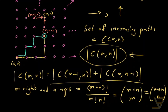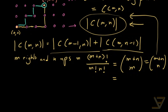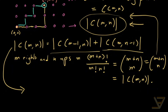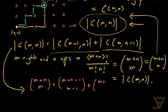So that is the formula for |C(m,n)|. We can substitute it into the recursion and we get that C(m+n, m) equals C(m+n−1, m−1) plus C(m+n−1, m).